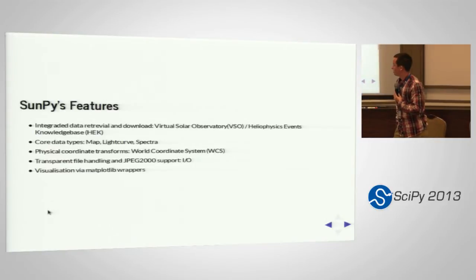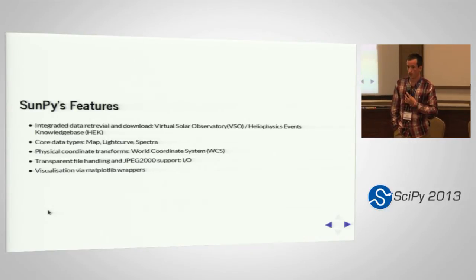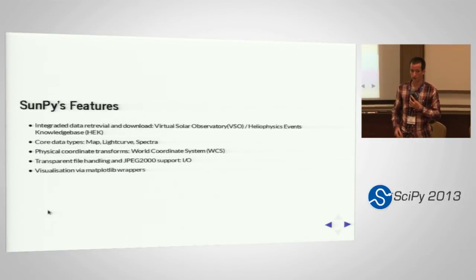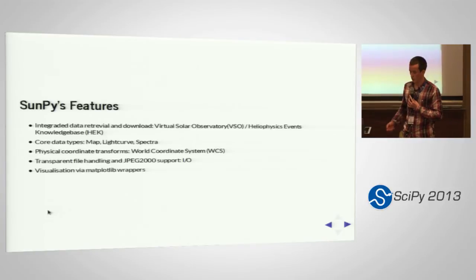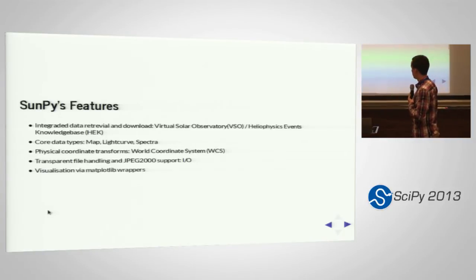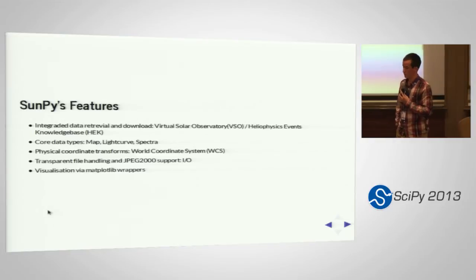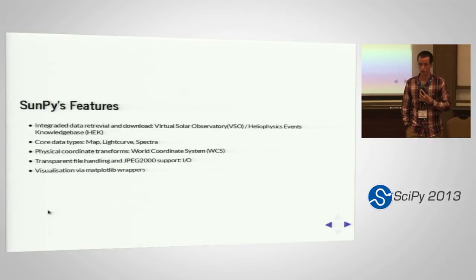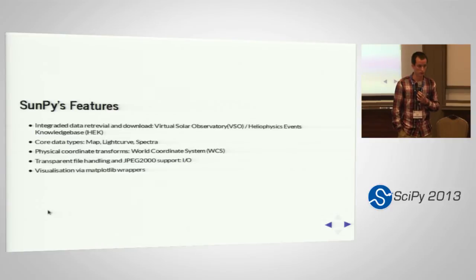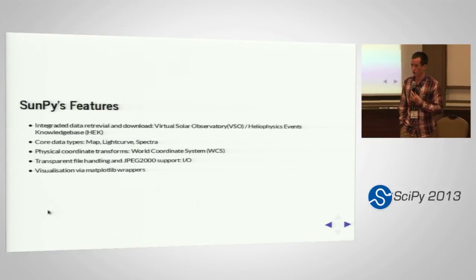The main core features in SunPy at the moment are the Virtual Solar Observatory (VSO), which is a Python API to a web service that allows you to download data off lots of different servers attributed to instruments where the data comes in. We also have a front end to the Heliophysics Events Knowledgebase (HEK), which is a database of events on the Sun like flares or eruptions. It tells you the spatial and temporal coordinates where these events happen, so you don't have to download terabytes of data and scan through it.